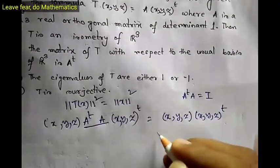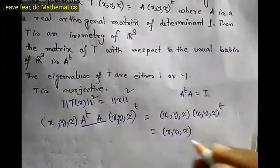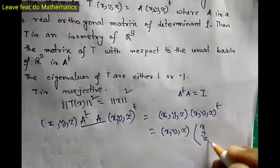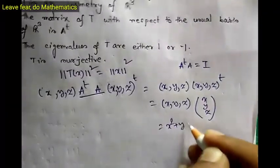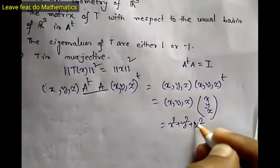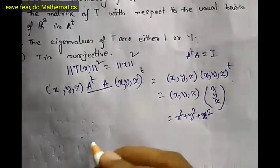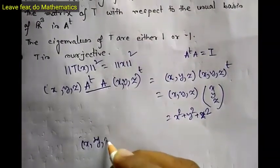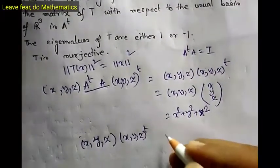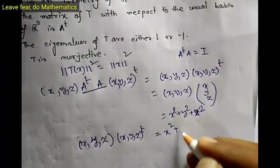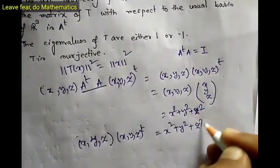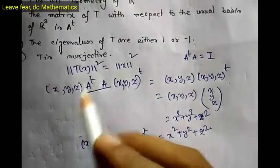Substituting the identity, this becomes (x, y, z) times (x, y, z) transpose, which equals x² + y² + z². This is the norm of T(x) squared. Similarly, the norm of x squared is (x, y, z)(x, y, z) transpose, which also equals x² + y² + z². Therefore norm of T(x) squared equals norm of x squared, so T is an isometry. Option A is correct.